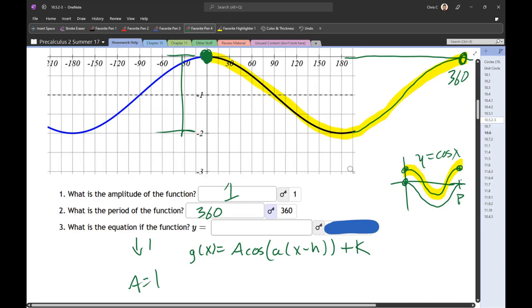So we have to do the shift down 1. So that means k is negative 1. Let's write that shift down 1. That means k is negative 1. There's no horizontal shift. So that means h is 0.